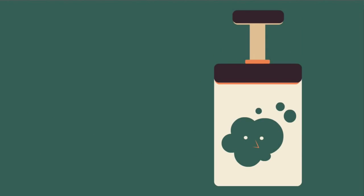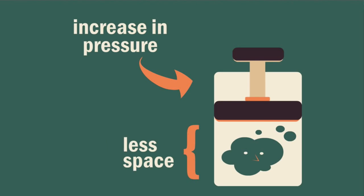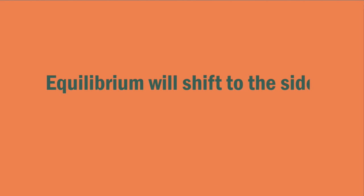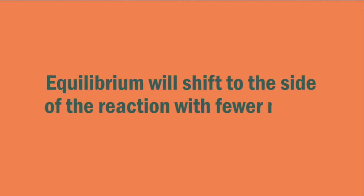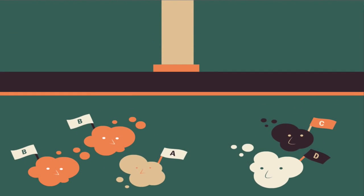An increase in pressure means that there is a decrease in volume, so there is less space. Equilibrium will shift to the side of the reaction with fewer moles. In our example, an increase in pressure will cause equilibrium to shift to the right, since there are fewer moles — two moles compared to three moles on the left.